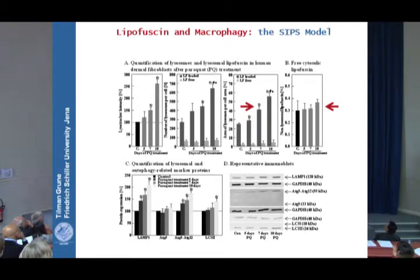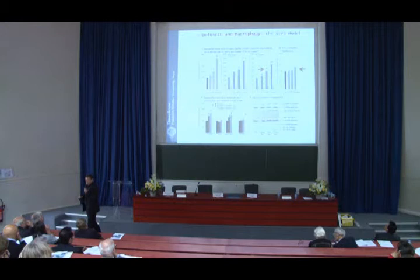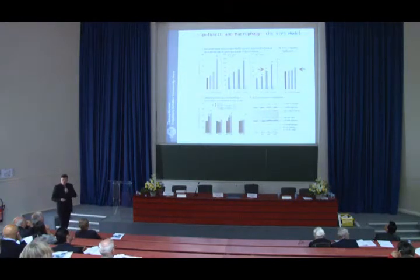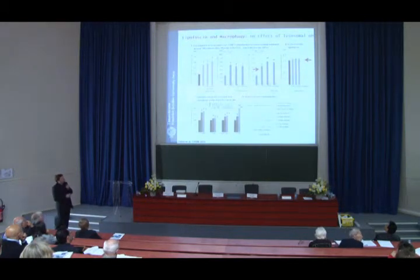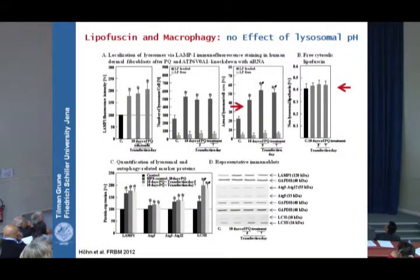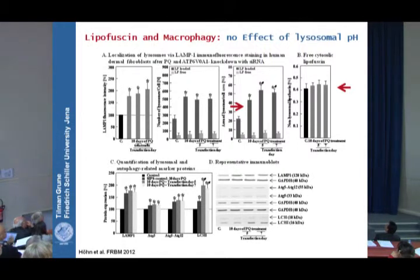First, we addressed whether this lysosomal lipofuscin requires the acidic pH of the lysosome to be formed. We knocked down with siRNA the ATPase transporting protons into the lysosome. When you knock down this ATPase, you no longer have the acidic pH in lysosomes, and you still have the same amount of lipofuscin in the lysosomes.